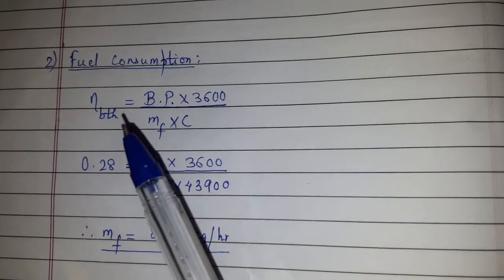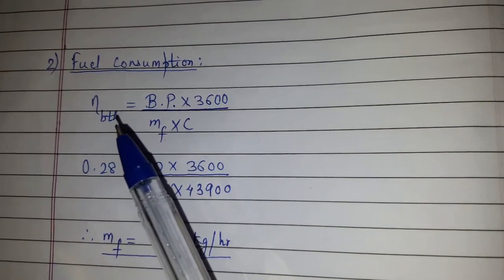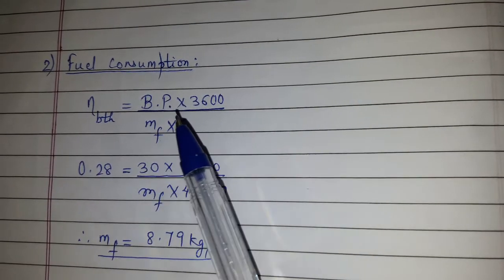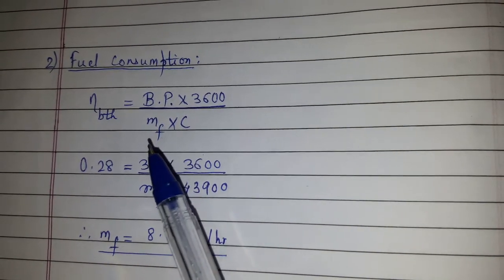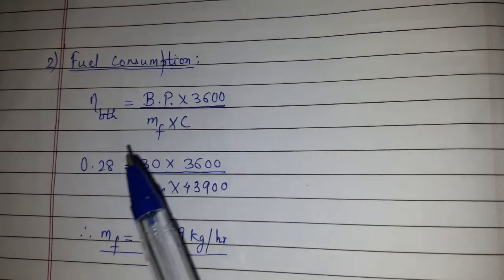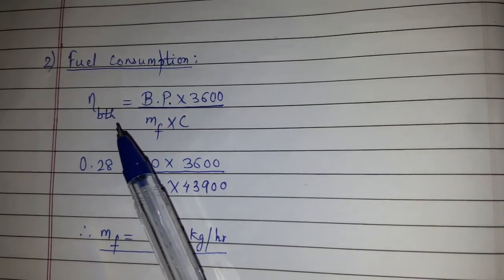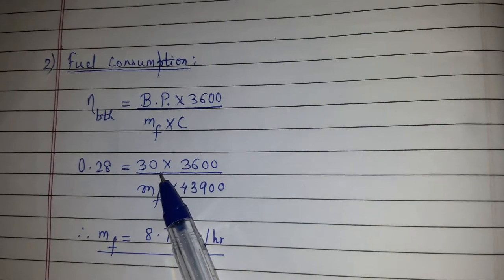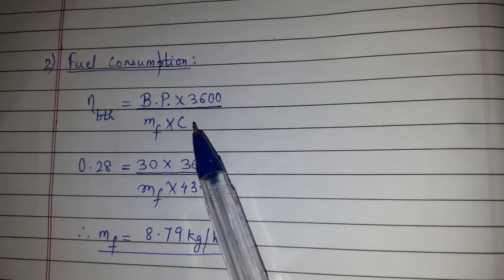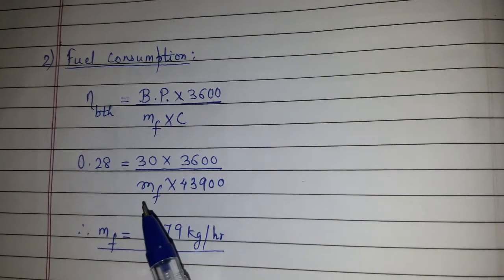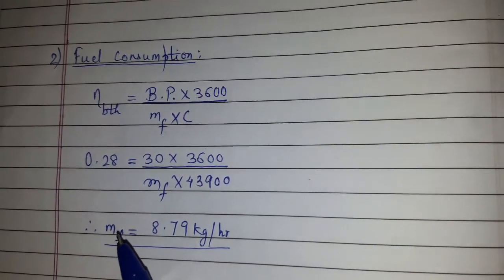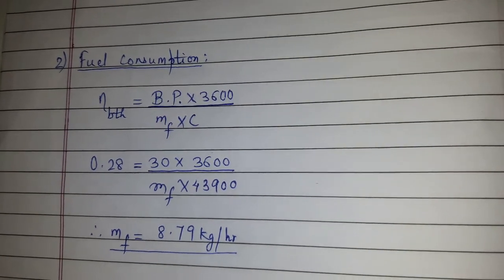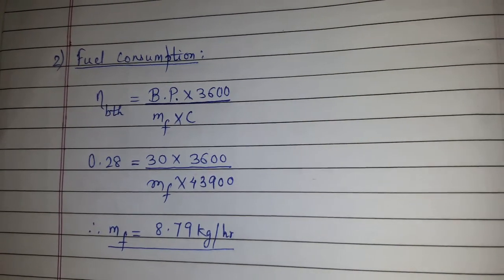Now the fuel consumption. We have been given brake thermal efficiency. So brake thermal efficiency formula is BP into 3600 upon MF into capital C. And we have brake thermal efficiency as 28 percent, that is 0.28. BP is known and MF is not known, and capital C is given as 43,900. Therefore MF equals 8.79 kg per hour. Please like, comment, share and subscribe. Thanks for watching.